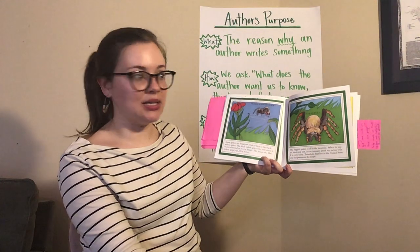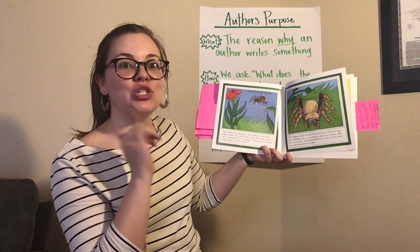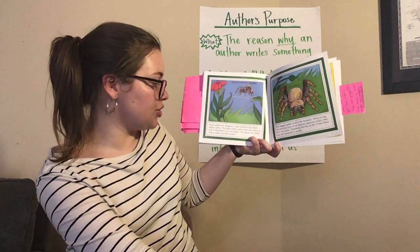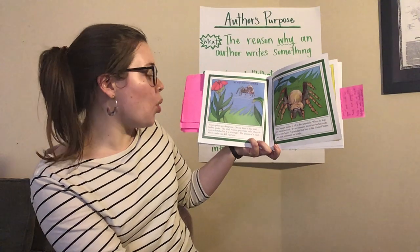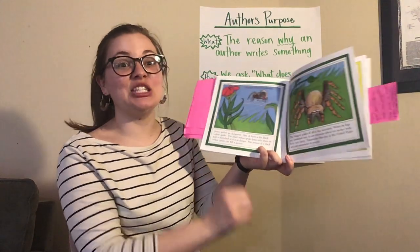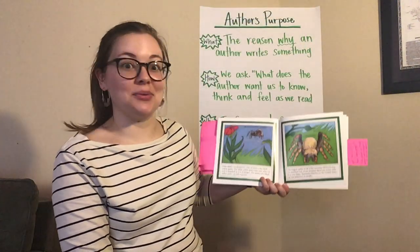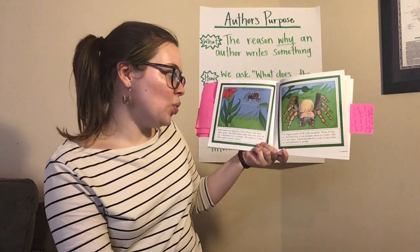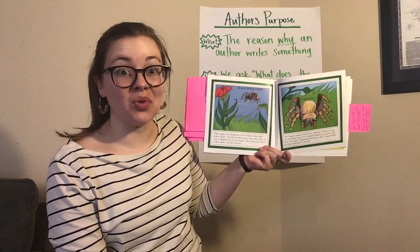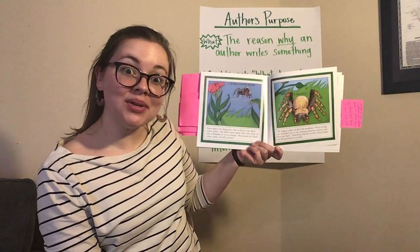Some spiders are dangerous. One of them is the black widow spider. The black widow spider bites only when its web is disturbed or it is in danger, and its poison can kill a person. But the biggest spider of all is the tarantula. Remember our author doesn't want us to be afraid. When its legs are stretched out it can measure about 10 inches wide — that might be bigger than some of your feet. It is very hairy. Tarantulas that live in the United States are not poisonous to people.